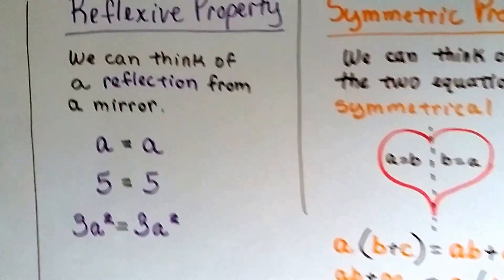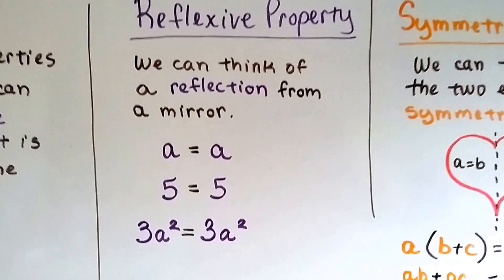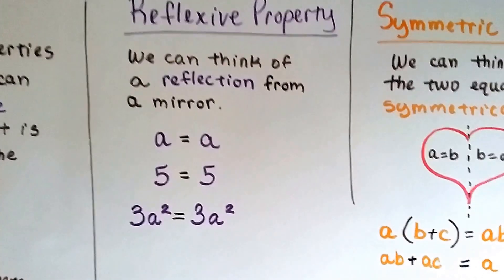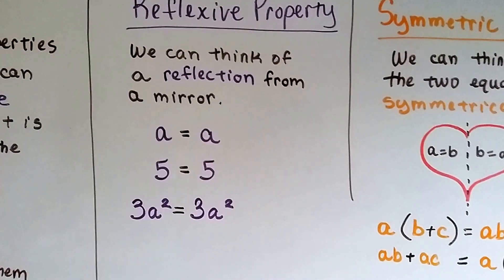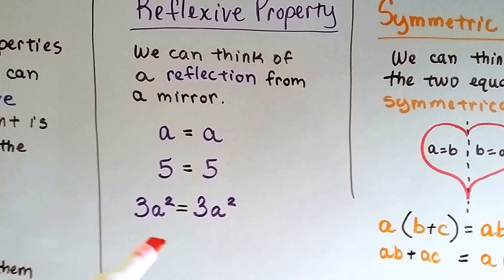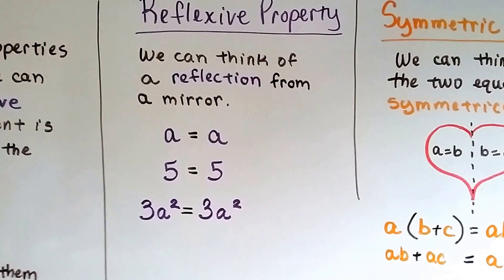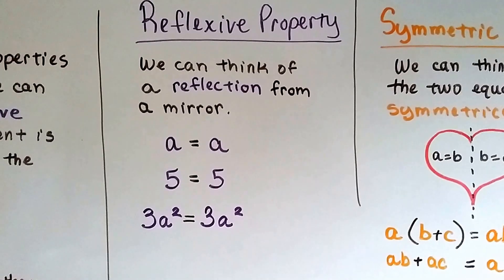So let's take a closer look at these. The reflexive property, we can think of a reflection from a mirror. It's a equals a. Whatever's on this side equals that side. 3a squared is going to equal 3a squared. Whatever's on the left is going to equal what's on the right. That's reflexive. It's like a reflection in the mirror.